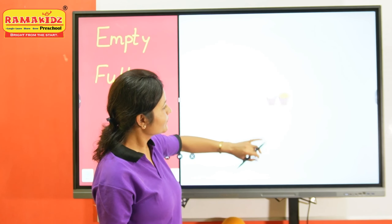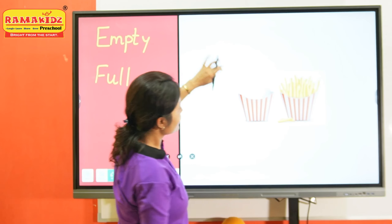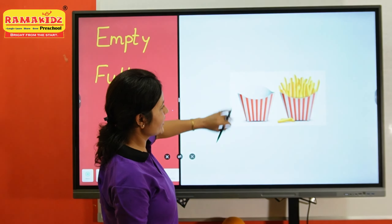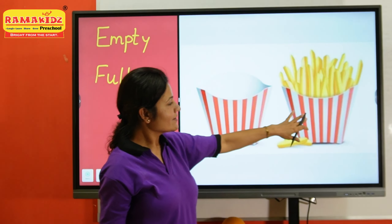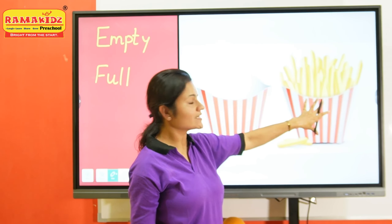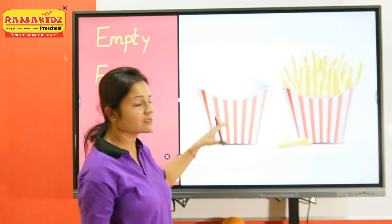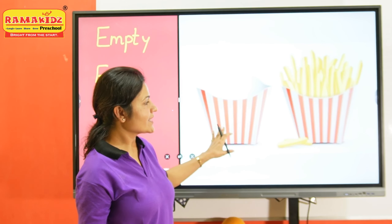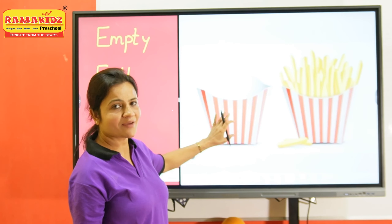Now take one more example. What is this? This is french fries. But here the french fries packet is full of french fries. And this packet is empty, there is nothing in this packet. This packet is full. This packet is empty.